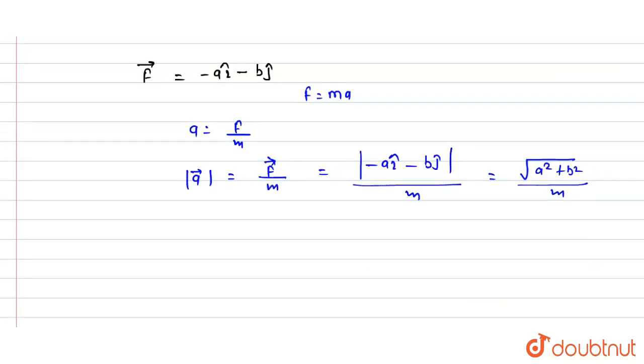So this is the required magnitude of acceleration. Magnitude of acceleration a can be written as square root of a squared plus b squared divided by m. So this is the final answer. I hope you understood, thank you.